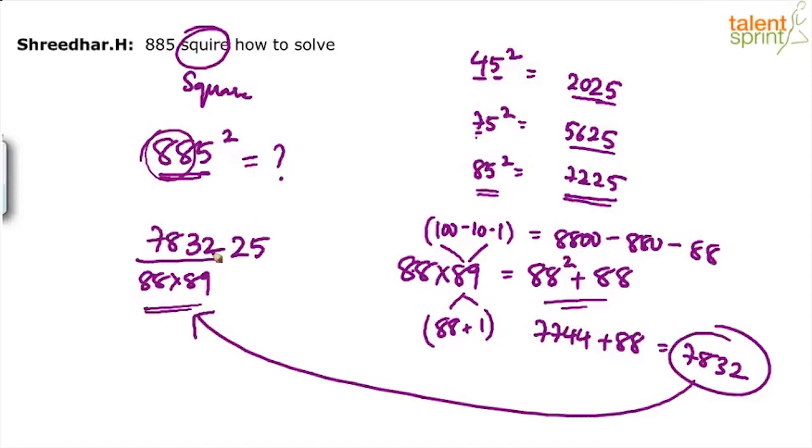7,832 to 5. And I hope I've not committed any mistake. 88 squared is 7744 plus 88. This will result in the answer. 885 squared.